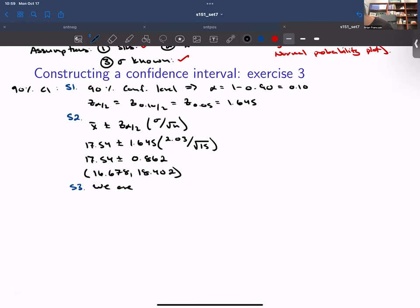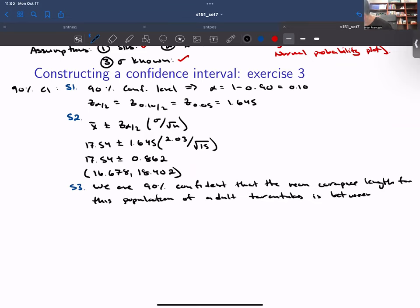we are 90% confident that the mean carapace length for this population of adult tarantulas is between 16.678 and 18.402 millimeters.